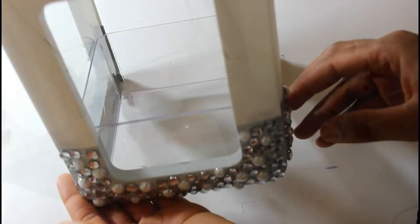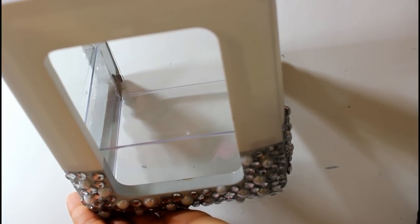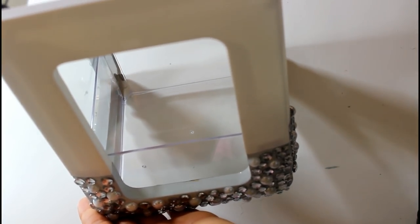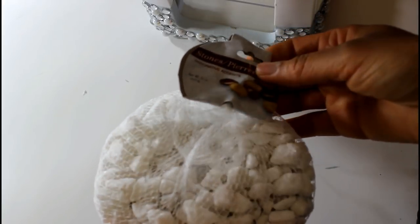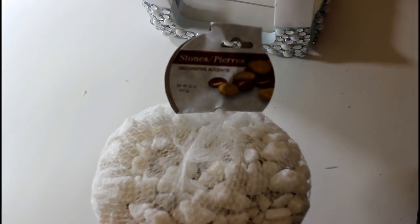What I'm going to do is just start to fill it up with my rocks and my flowers. I picked up these little rocks from the Dollar Tree and you can find these quite easily. They also have sand if you wanted to use that instead.